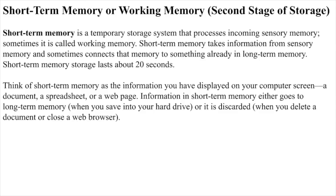Short-term memory is a temporary storage system that processes incoming sensory memory, sometimes called working memory. Short-term memory takes information from sensory memory and sometimes connects that memory to something already in long-term memory. Short-term memory storage lasts about 20 seconds. Think of short-term memory as the information you have displayed on your computer screen — a document, a spreadsheet, or a webpage. Information in short-term memory either goes to long-term memory, like saving to a hard drive, or is discarded when you delete a document or close a web browser.